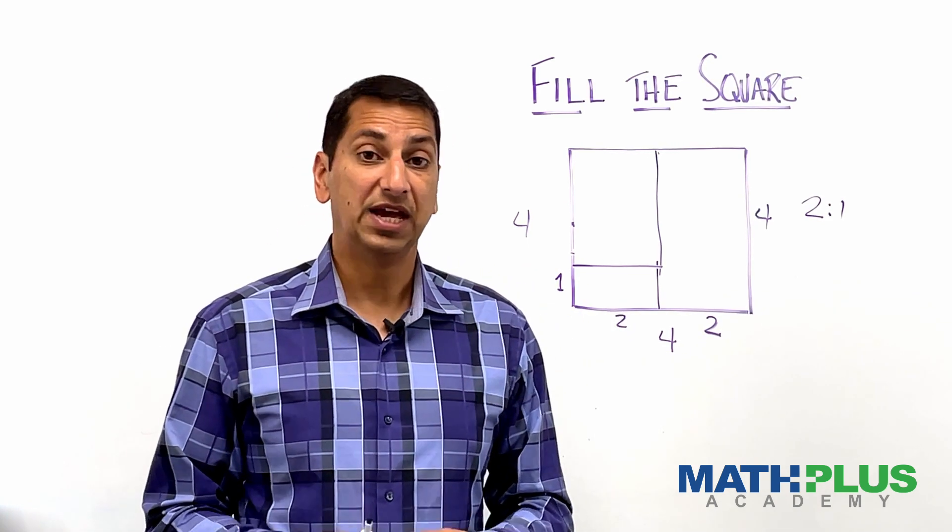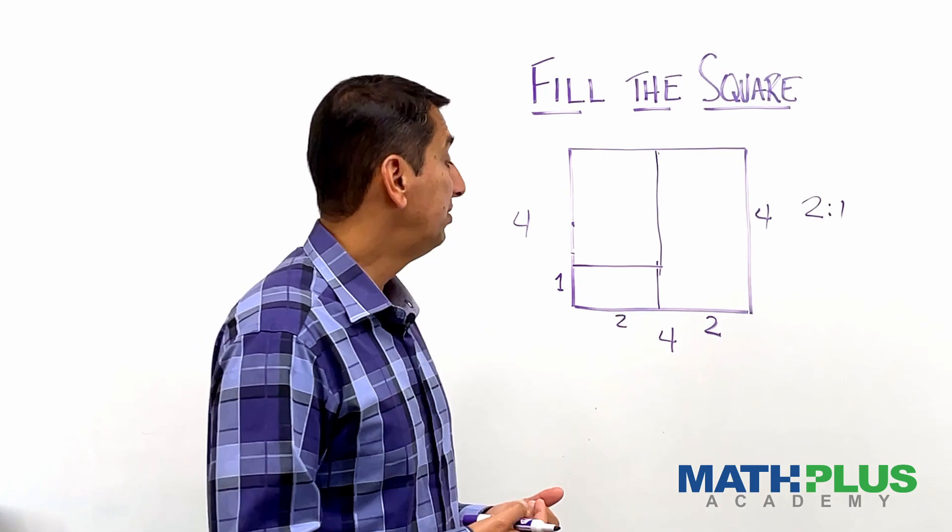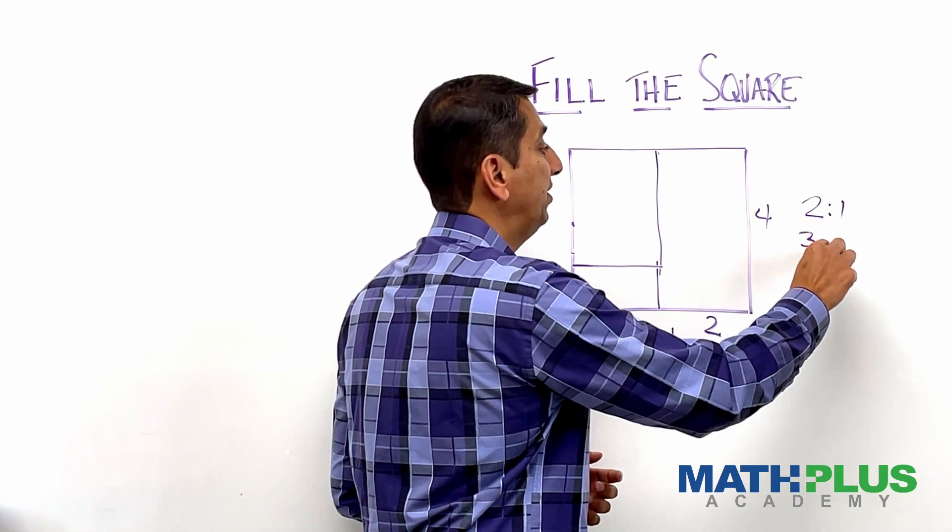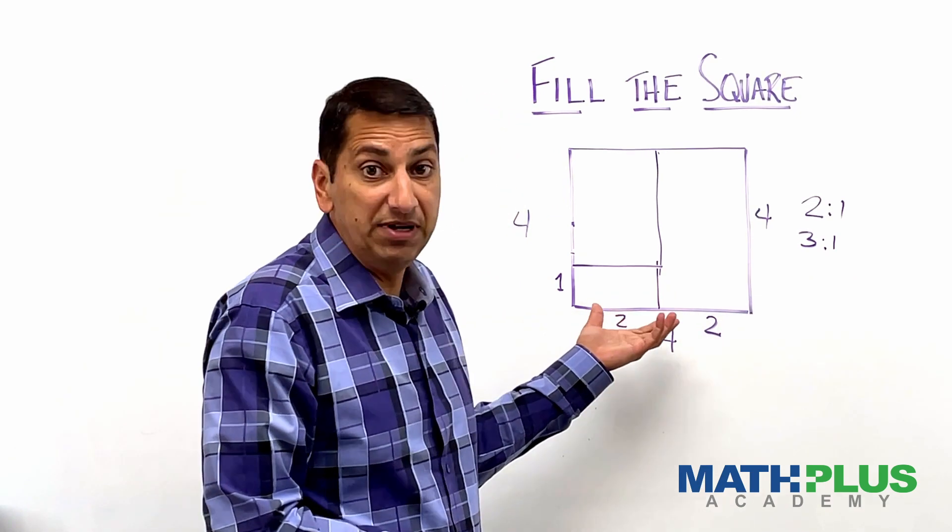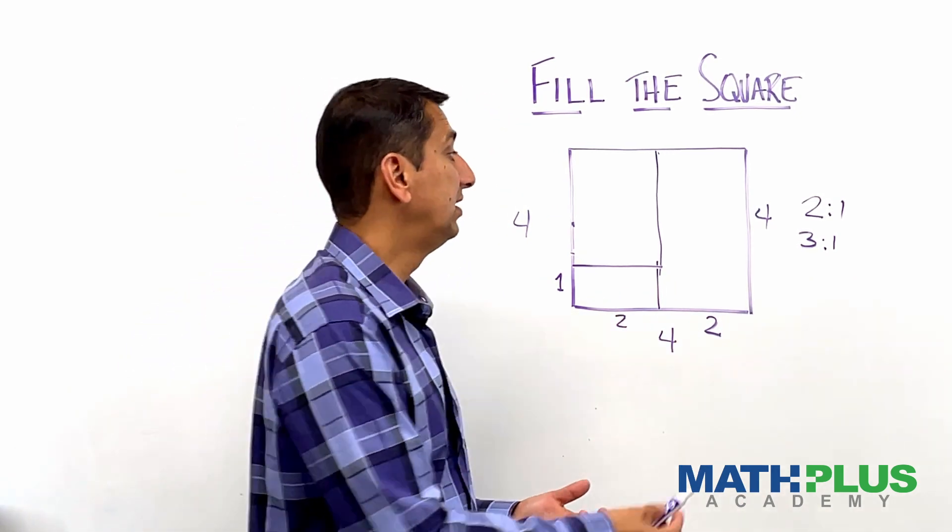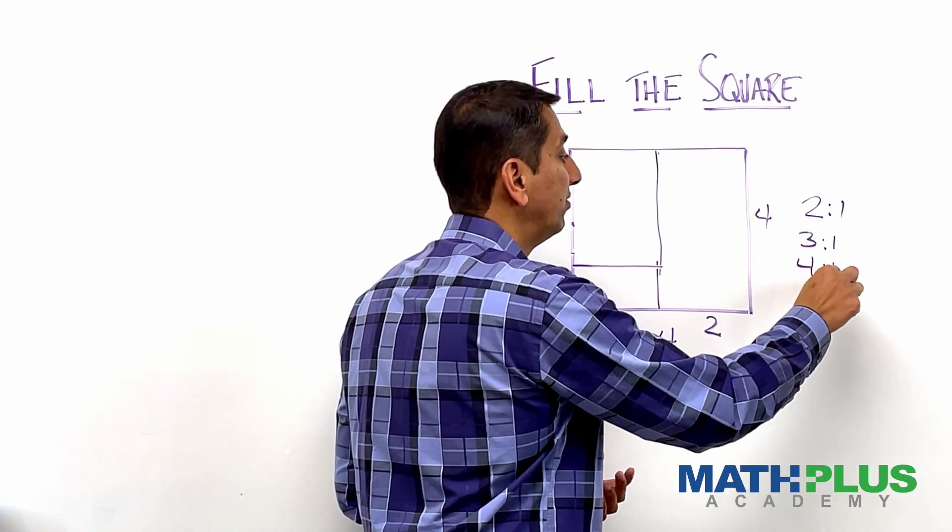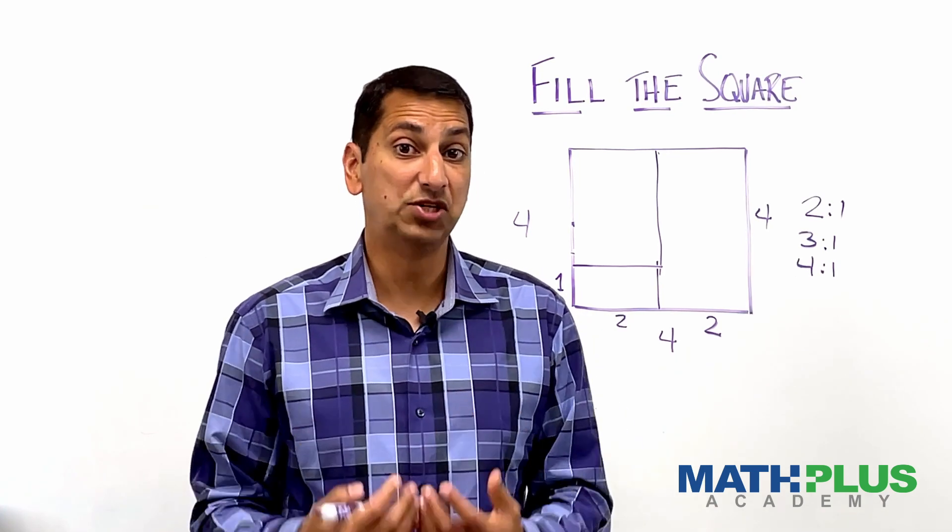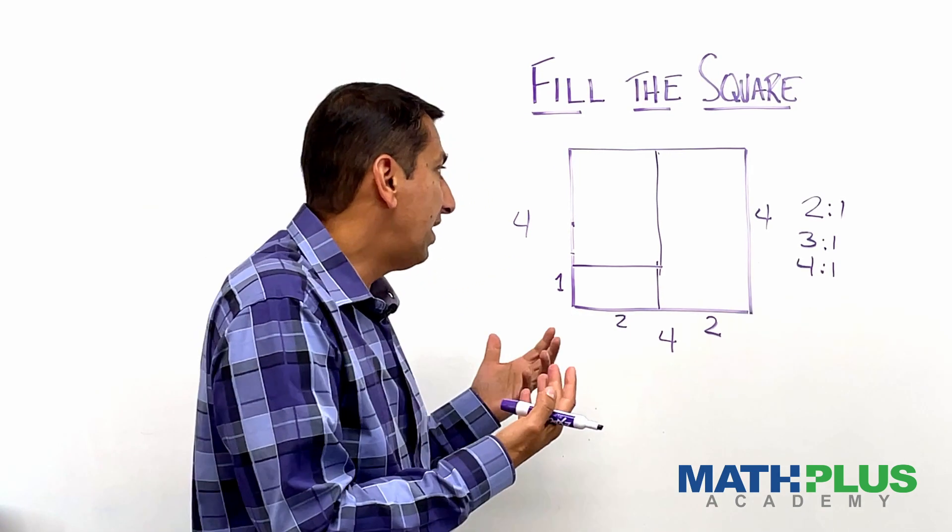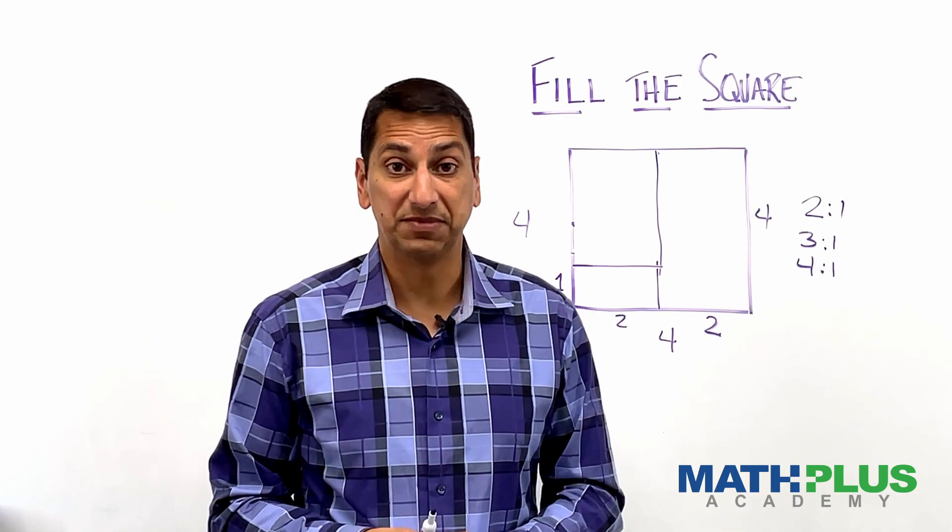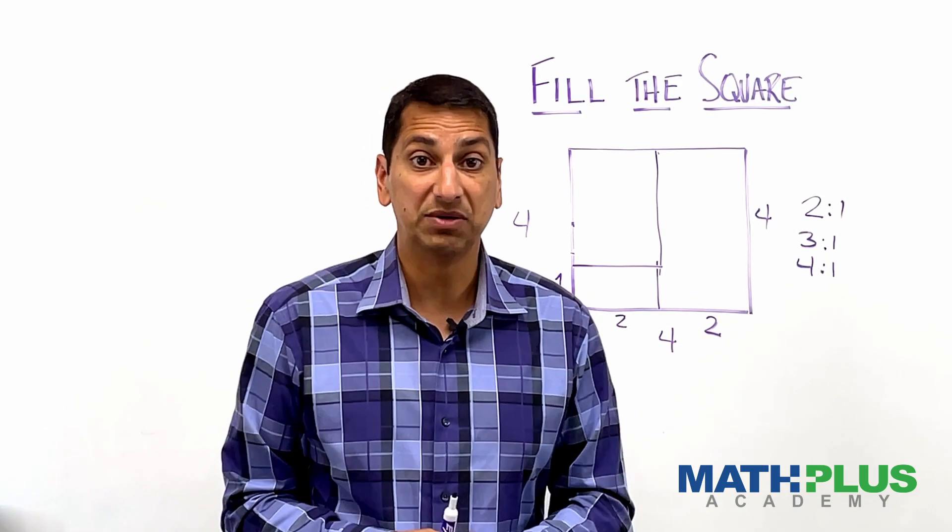If you solve this and you're looking for another challenge, maybe change the ratio. What about rectangles that are three to one? Can you fill this with three to one rectangles? Is it possible? If so, how many do you need? What about four to one? There are all kinds of things you could try here to extend off of this. And if you want to get super creative, maybe even think about extending this to other shapes like triangles or something. I don't know. Definitely something you can play with.